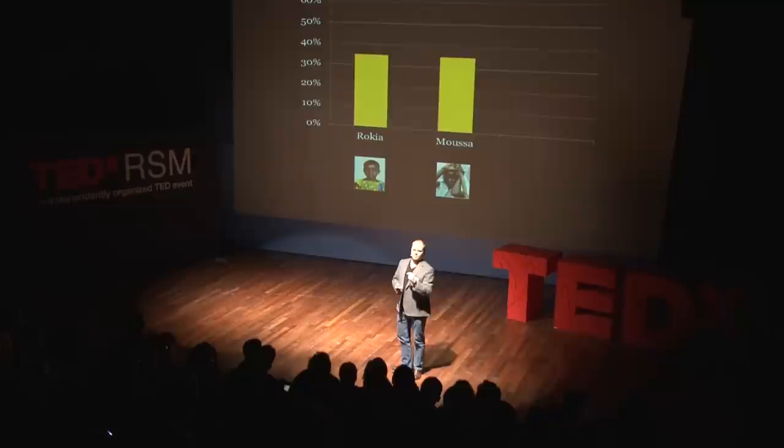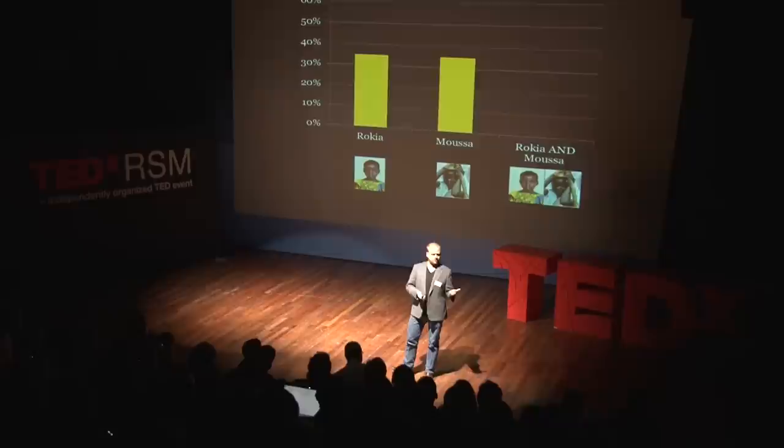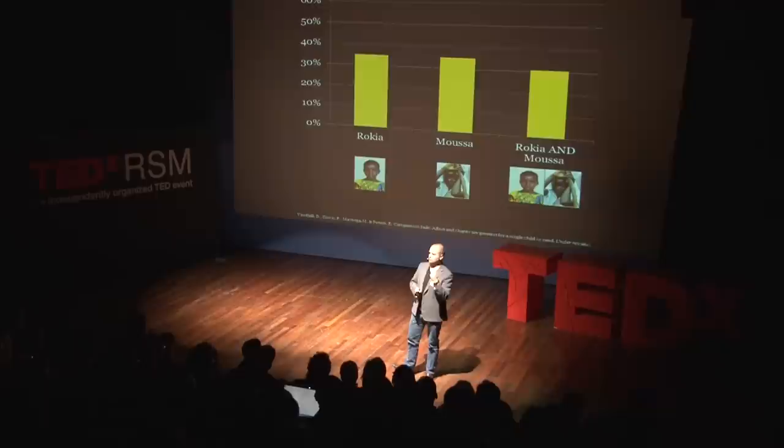A third group of people was asked to save the life of Rukia and Musa. According to the rational model, you would expect that people would donate more to save the lives of two children than to save the life of one child. Maybe you wouldn't expect them to donate 75%, but you would at least expect them to donate more than to save one child. In reality, people actually gave less. So here's a case where people seem to value the saving of two lives worth less than saving one life, and this has been found over and over in experiments. People contributed more to save one victim than to save seven victims.